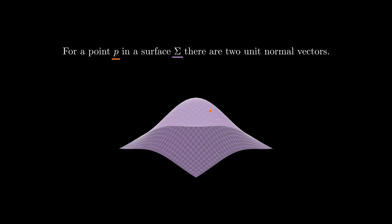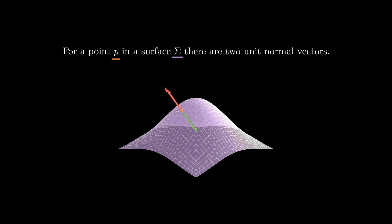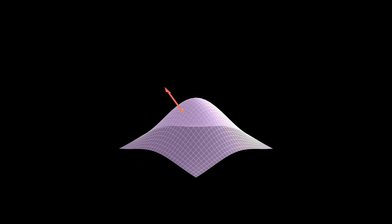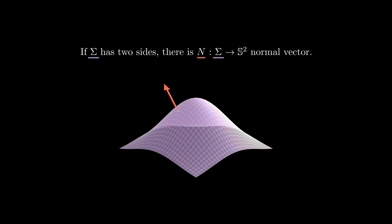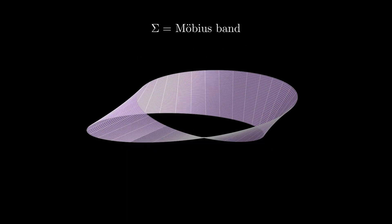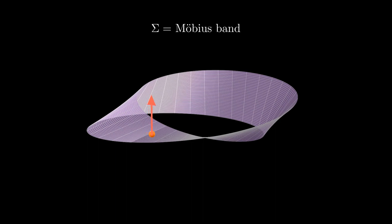For a surface sigma and a point p in sigma, there are two unit vectors perpendicular to sigma at p. If sigma has two sides, then we could construct a continuous map n that assigns to each point p in sigma a unit vector perpendicular to sigma at p. Of course, we would not be able to do that on the Möbius band, which has only one side.